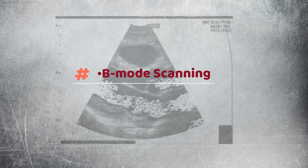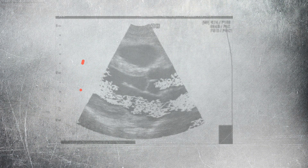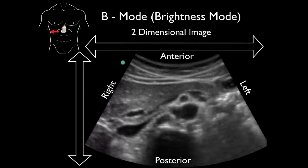In B Mode ultrasound, a linear array of transducers simultaneously scans a plane through the body that can be viewed as a two-dimensional image on screen.